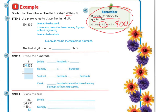Using base-10 understanding — looking at 4,236 divided by 5 — I first look at the thousands. 4,000 cannot be shared among 5 groups without regrouping, so I look at the hundreds. There are 42 hundreds that can be shared among 5 groups, so the first digit is going to be in the hundreds place.